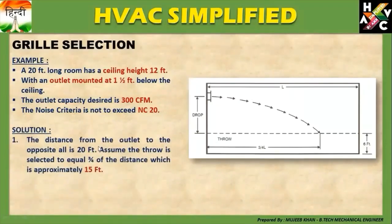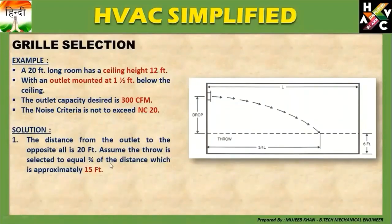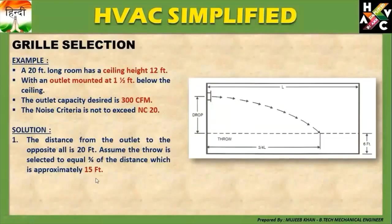The distance from the outlet to the opposite wall is 20 feet। Assume the throw selected is equal to 3/4 of the distance, which is approximately 15 feet — यानि total length का 3/4 length हमारी maximum throw derive होती है जो 15 feet है। इन parameters के basis पे हमें grill का selection करना होता है।